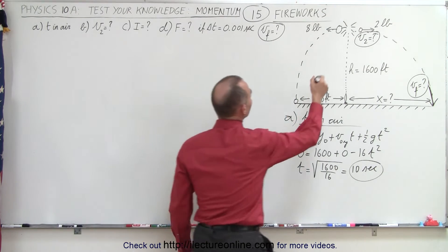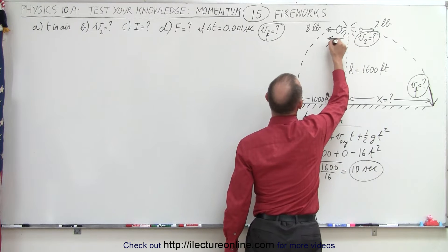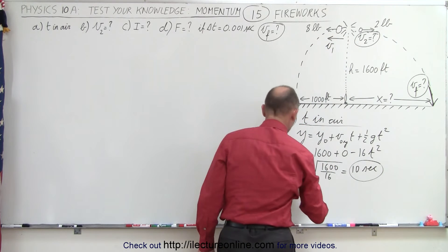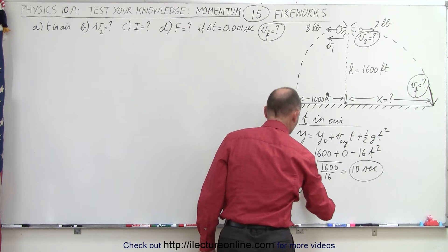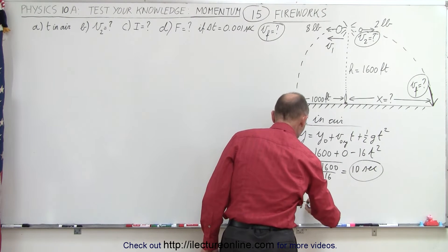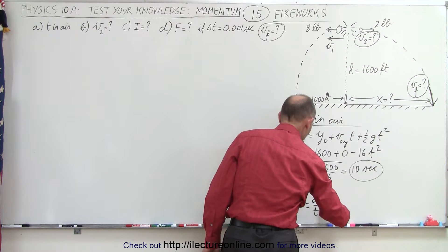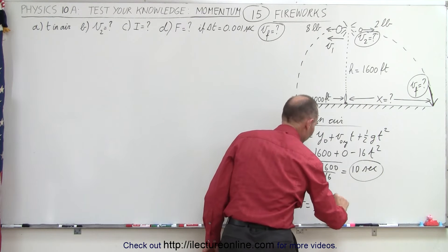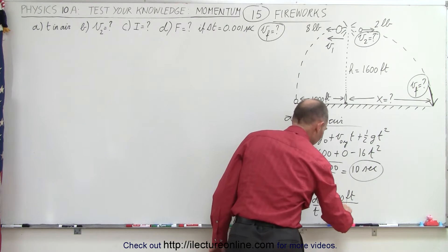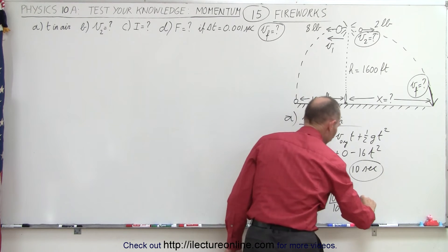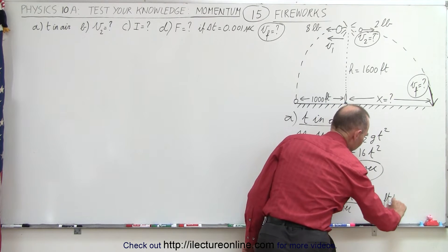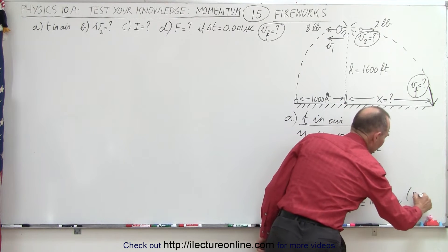From that we can calculate velocity one — the velocity of the eight-pound piece — because distance equals velocity times time, or velocity equals distance divided by time. We know that it reaches a distance of 1000 feet in a time of 10 seconds, which means that the velocity is 100 feet per second for the eight-pound piece.